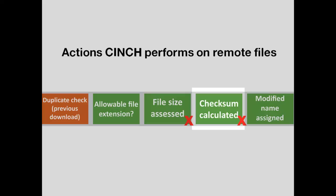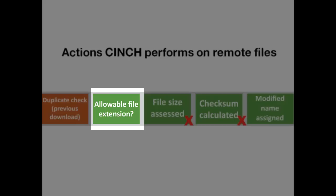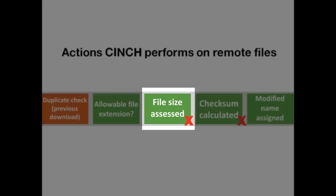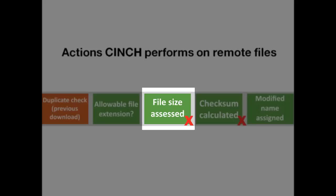Once you have uploaded your file list and Cinch has located the requested files, it performs the following actions on the files in their remote location. It calculates the checksum, or hash, of the remote file — if this isn't successful, a note is made in the event list and the file is not downloaded. It checks to make sure the file has an allowable extension, and checks the file name against any previous files you've downloaded, moving duplicates to a problem files folder. It also assesses the size of the file — Cinch can only handle files up to 0.4 GB, and anything larger will not be downloaded, with a message added to the event list.